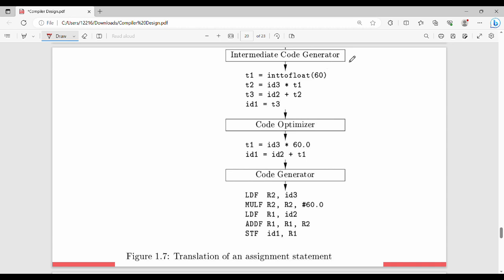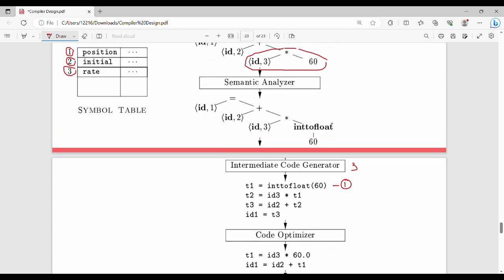Intermediate code generator generates 3 address code. First t1 equal to int to float 60. This converts to float. Then we multiply. In the next step, t2 is equal to id3 into t1. The result is t2. Next step, id2 plus t2, we store in t3. Finally, id1 is equal to t3. So this is the ICG 3 address code.